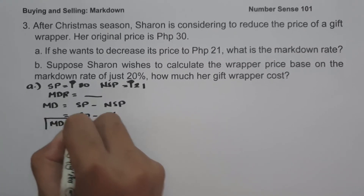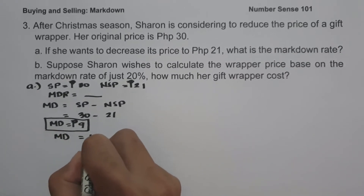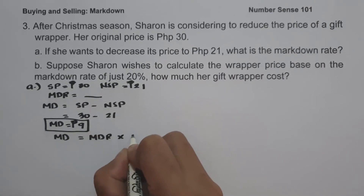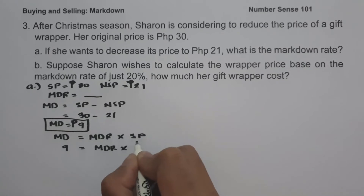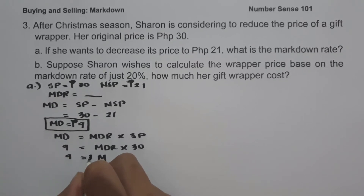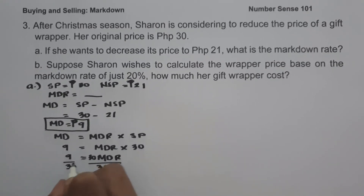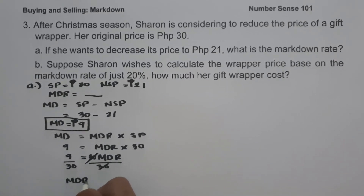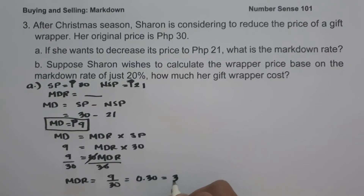To solve for the markdown rate, let us find the markdown first: markdown equals selling price minus new selling price, so 30 minus 21 equals 9 pesos. Using the formula markdown equals markdown rate times selling price, we have 9 equals markdown rate times 30. Dividing both sides by 30, markdown rate equals 9 over 30, which is 0.30 or 30%. This is the markdown rate and our answer for letter A.